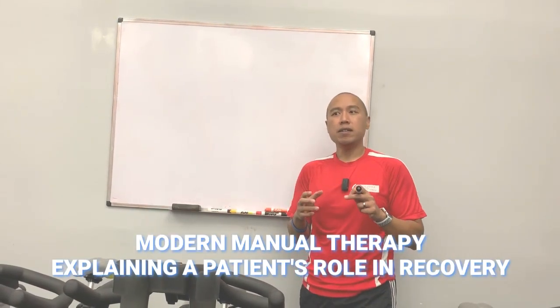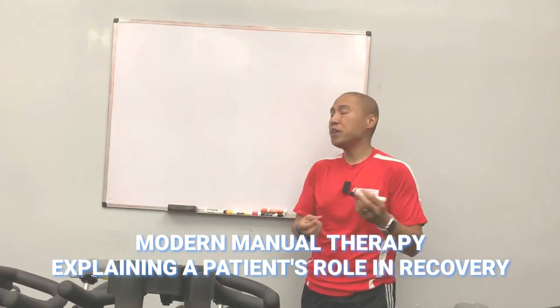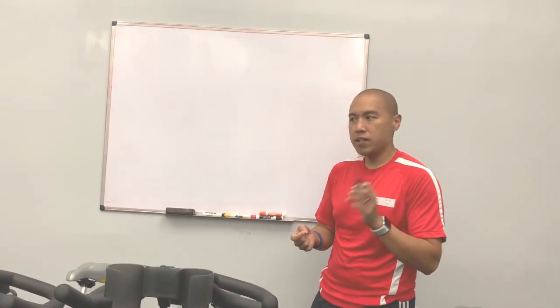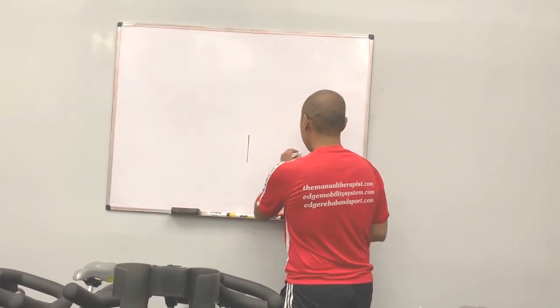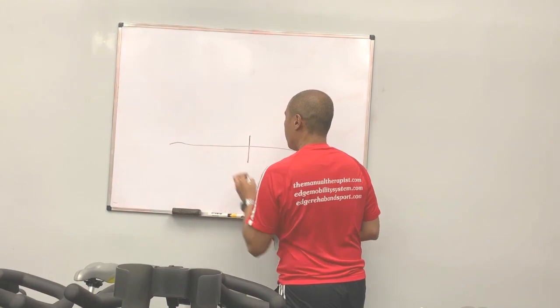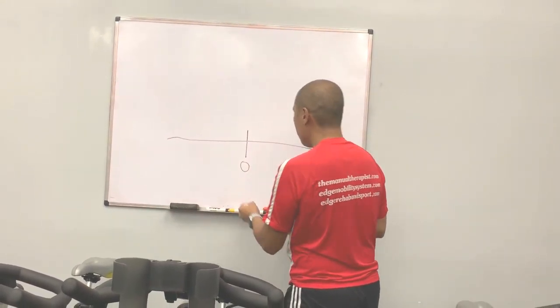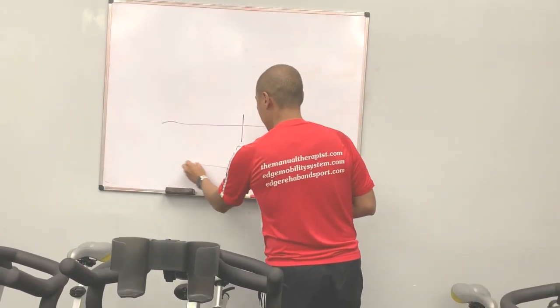What I want to go over is the number line, so the window of improvement, which is also a bit—I have a video on window of improvement which is more like an infographic, but the number line is something I do interactively with patients. So let's just say this is zero. Everything above zero is positive and everything below zero is negative.